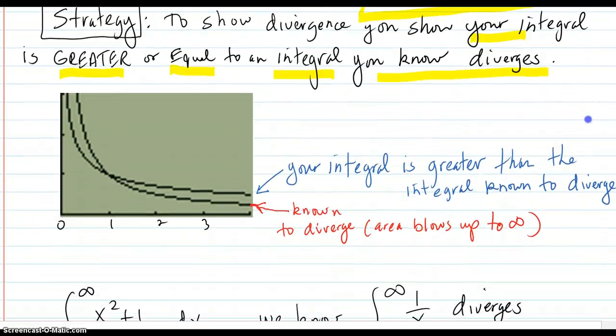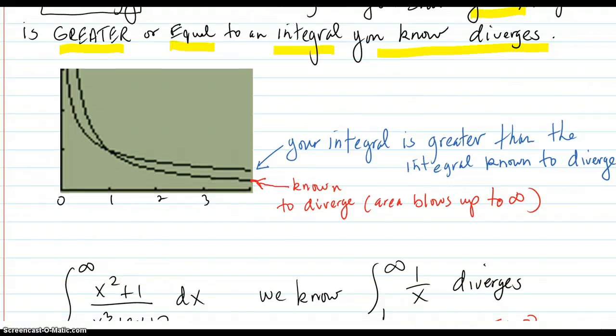So here's a picture of that. Let's say this bottom curve is known to diverge because it just doesn't dive down to the x-axis fast enough.